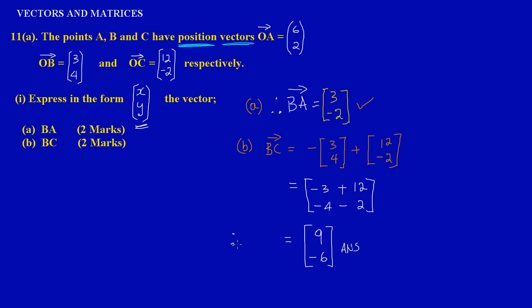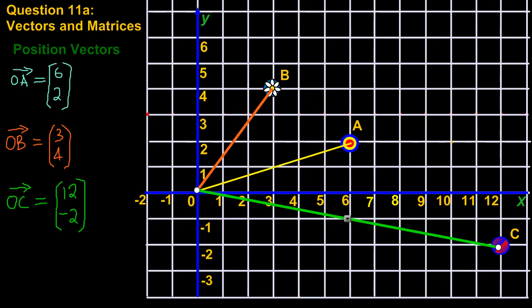Therefore, vector BC is 9, negative 6, and it's pretty easy. Remember, the value at the top is the X, which is 9, and the value at the bottom is the Y movement, which is negative 6. We can verify on the graph: starting at B and moving to C, we go positive 9 on the X axis — 1 through 9 — and then negative 6 on the Y axis — coming down 1 through 6. Both the calculation and the graph give the same value.